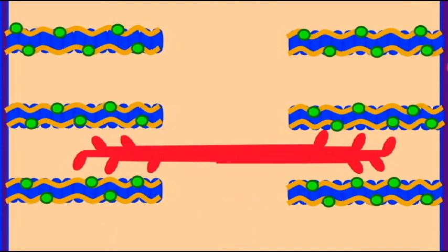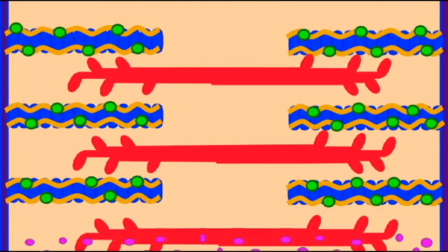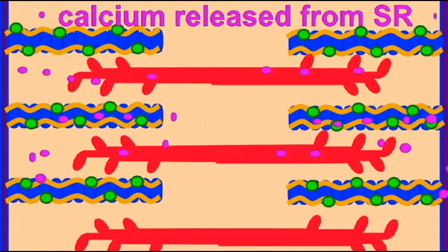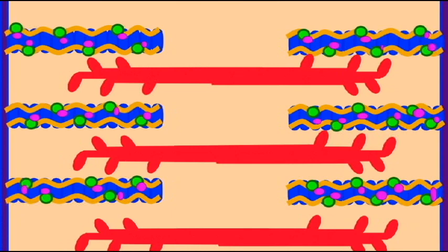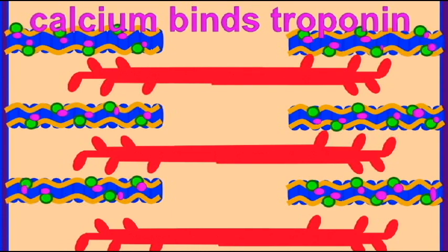When calcium is released during an action potential, the calcium will bind to the troponin, and this then moves tropomyosin out of the way. The active sites are now exposed and open.